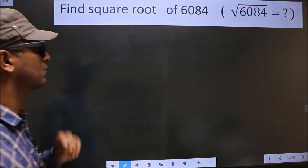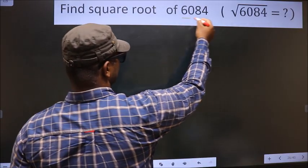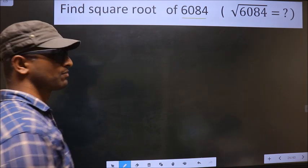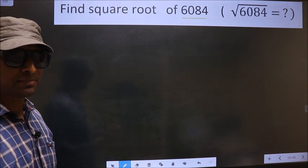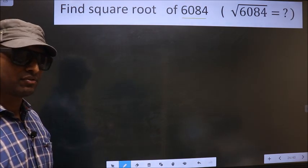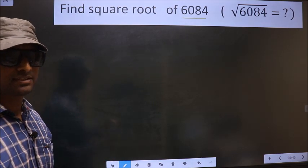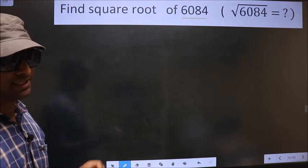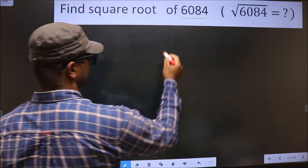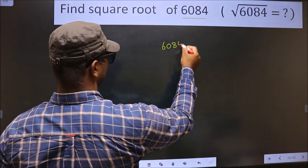Find the square root of 6084. To find the square root by the long division method, first we have to frame it in this way — that is 6084.